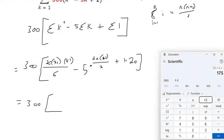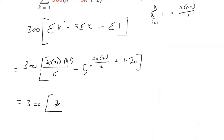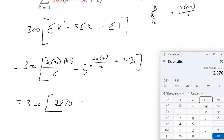Okay, so the first one, 20 times 21 times 41 divided by 6 is 2,870. Then we got 20 times 21 divided by 2 times 5, so that's 1,050.